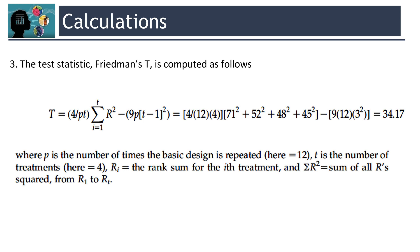Then, by using this equation, you should calculate the test statistic Friedman's T. So, here P is the number of times the basic design is repeated. In our example, it is 12. And the simple T is the number of treatments. In our sample, it is 4.